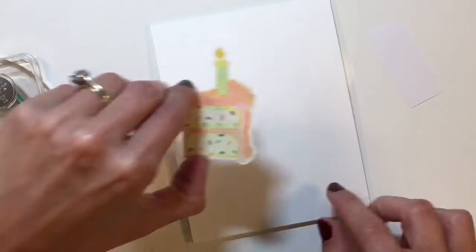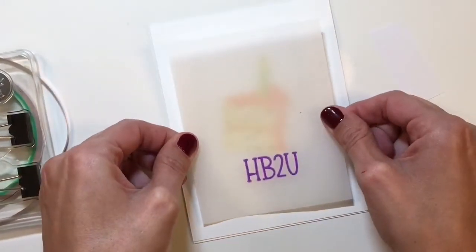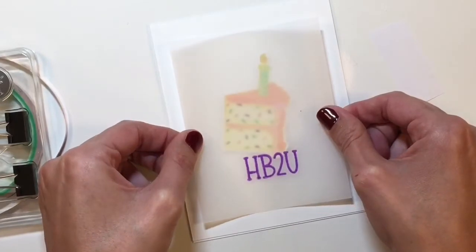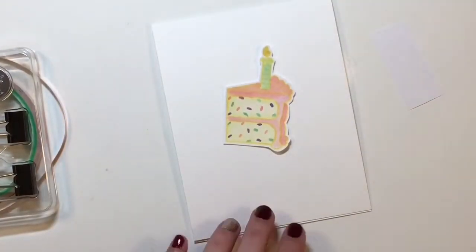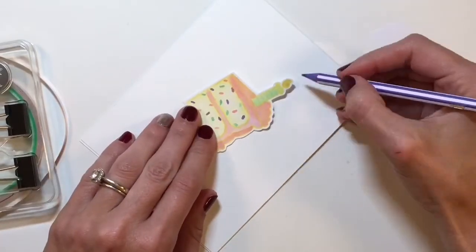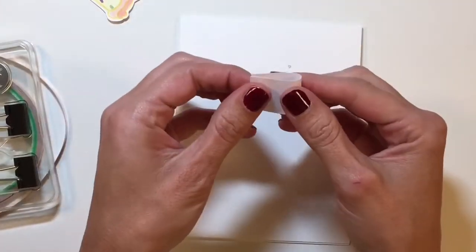Now I'm pulling out the Chibitronics light collection. It comes with some copper tape and batteries and a few different light choices. I'm trying to make sure that I have, obviously if you can't tell by now, I'm going to have the candle lit up on the birthday cake. So it's just going to be one light, very simple, anybody can do it.